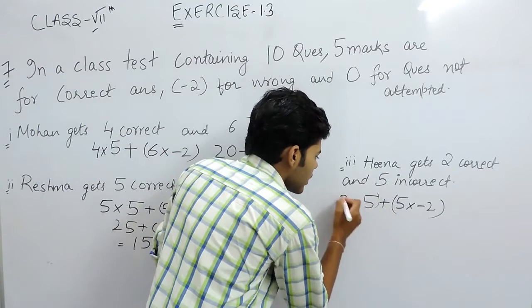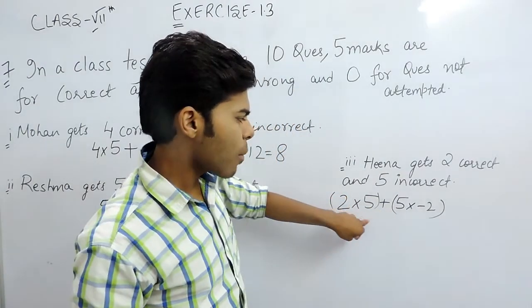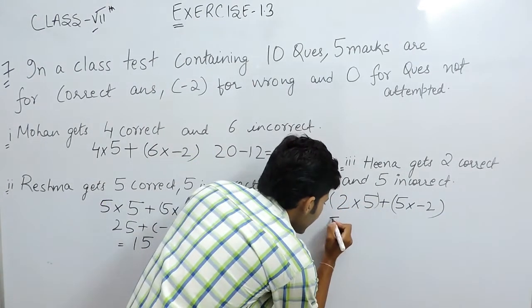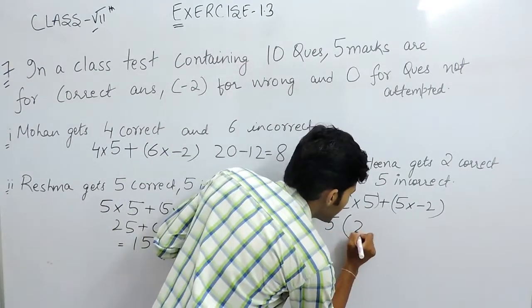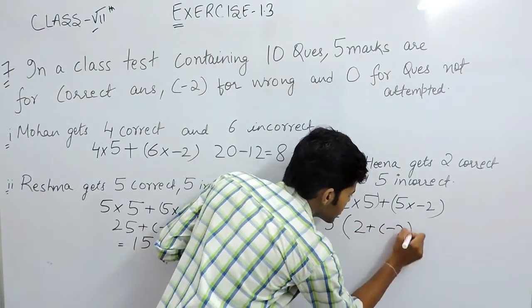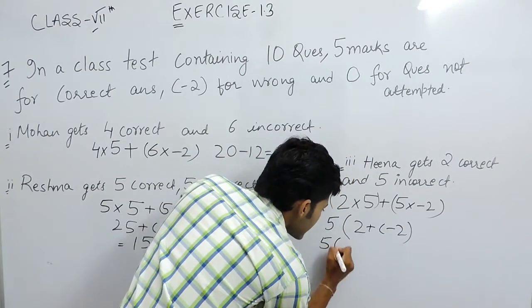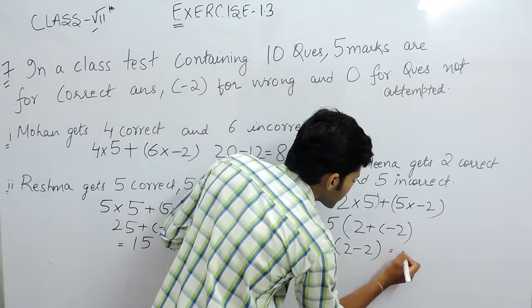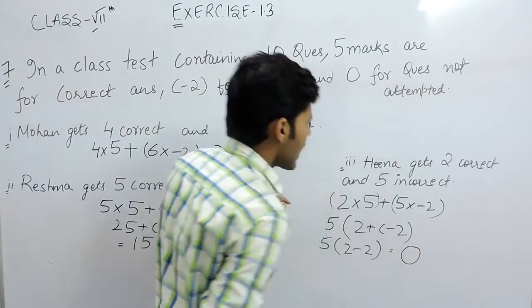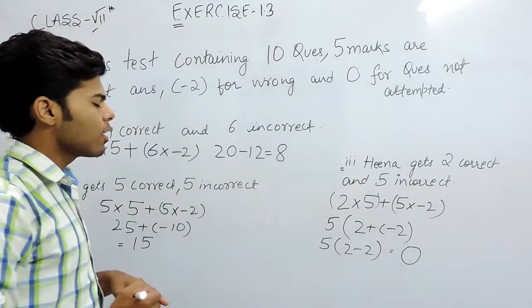Now you can see that 5 is common in both of these. So we can take 5 common outside. Inside the brackets, there remains 2 plus minus 2. So that will be 5 times (2 minus 2), and the answer will be 0. Which means that Hina will get 0 marks.